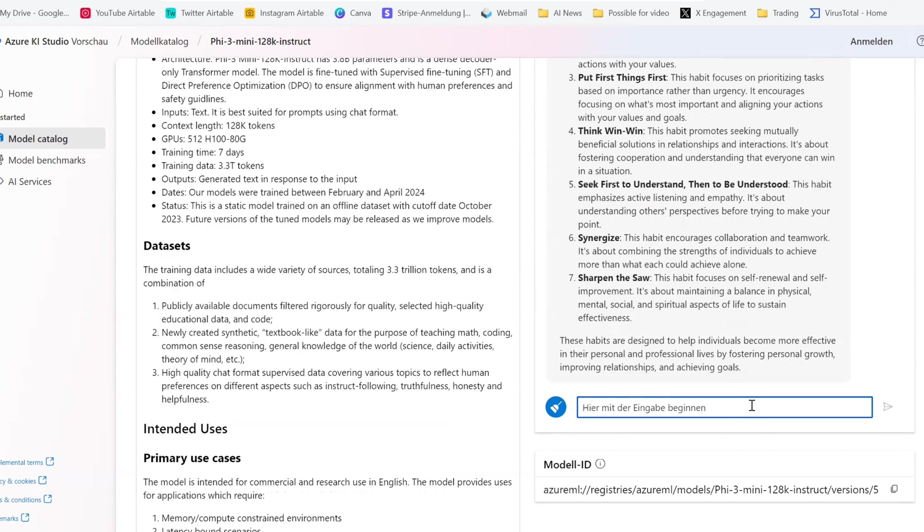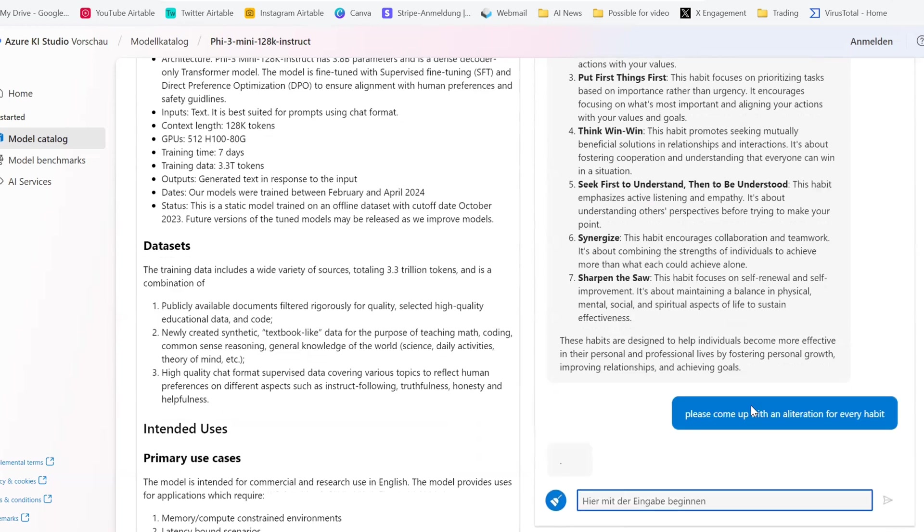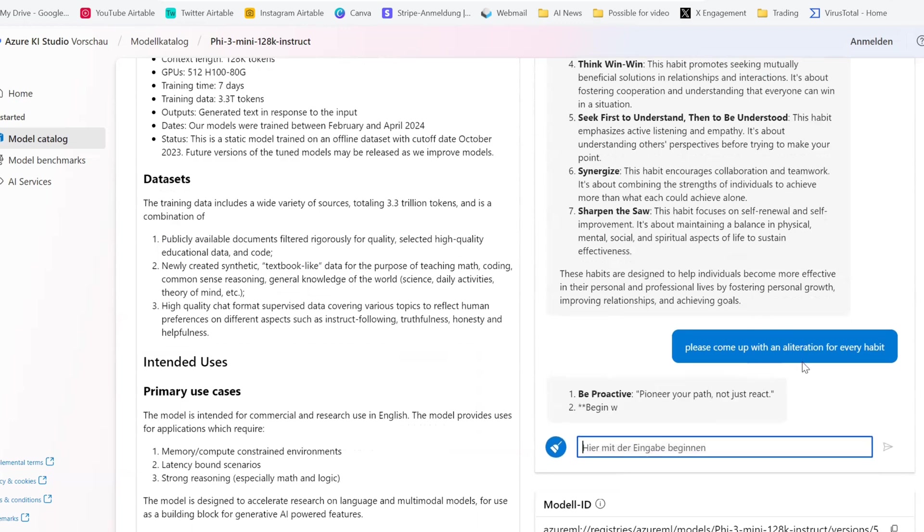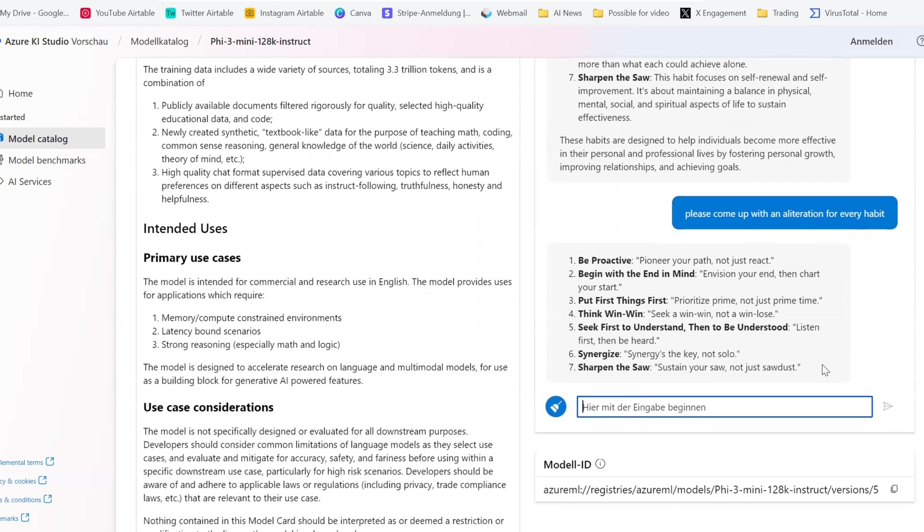Now, let's try something more funny here. Please come up with an alliteration for every habit. Pioneer your path, not just real. Envision your end, then chart your start. Okay. Prioritize prime, not just primetime. Okay. Listen first, and yeah, okay. I mean, not sustain your saw, not just sawdust. Not sad grade of an alliteration spot. Well, I mean, then again, maybe it's not the easiest thing to do.